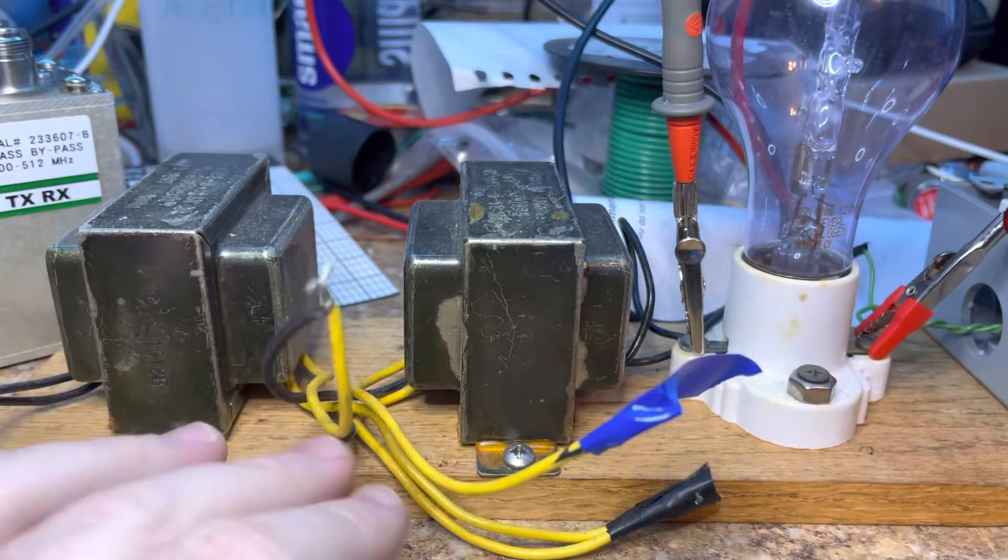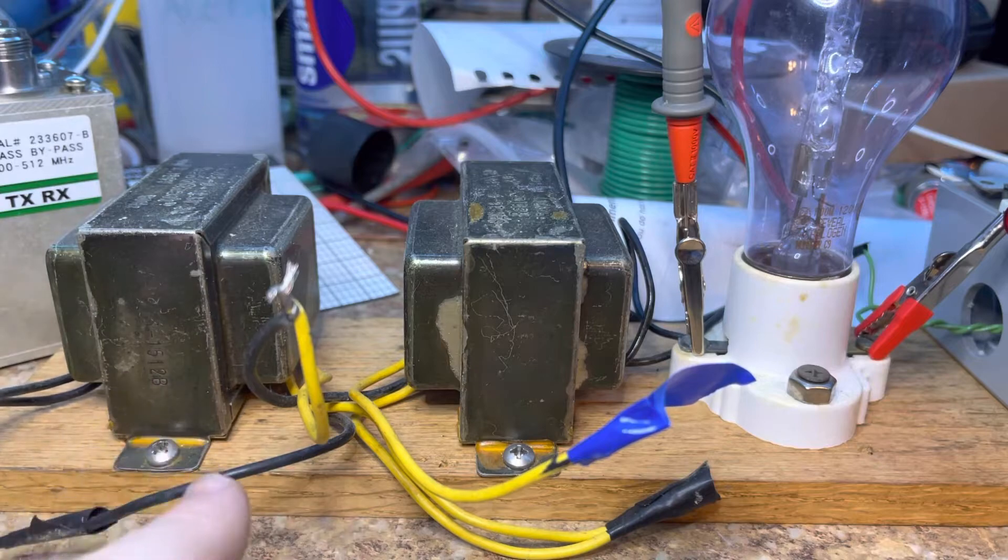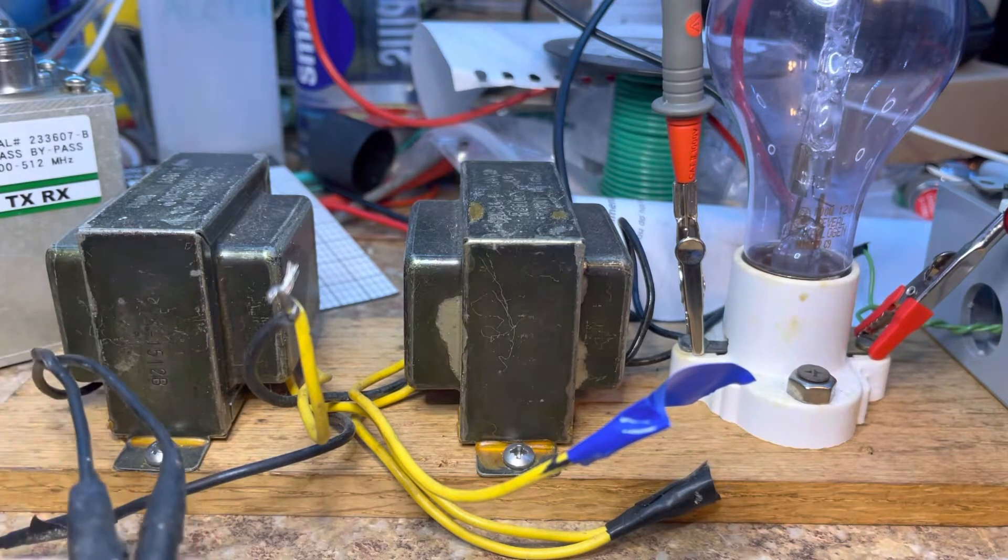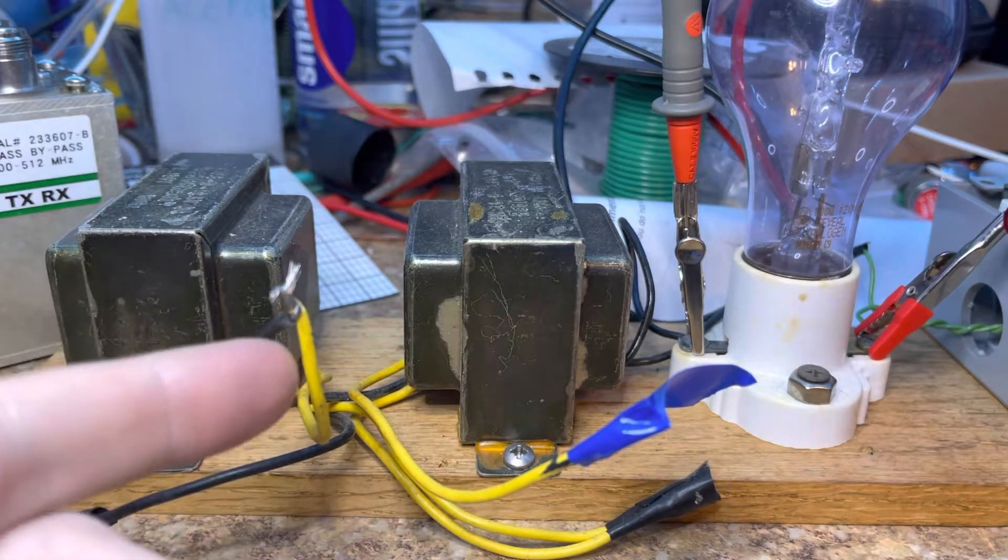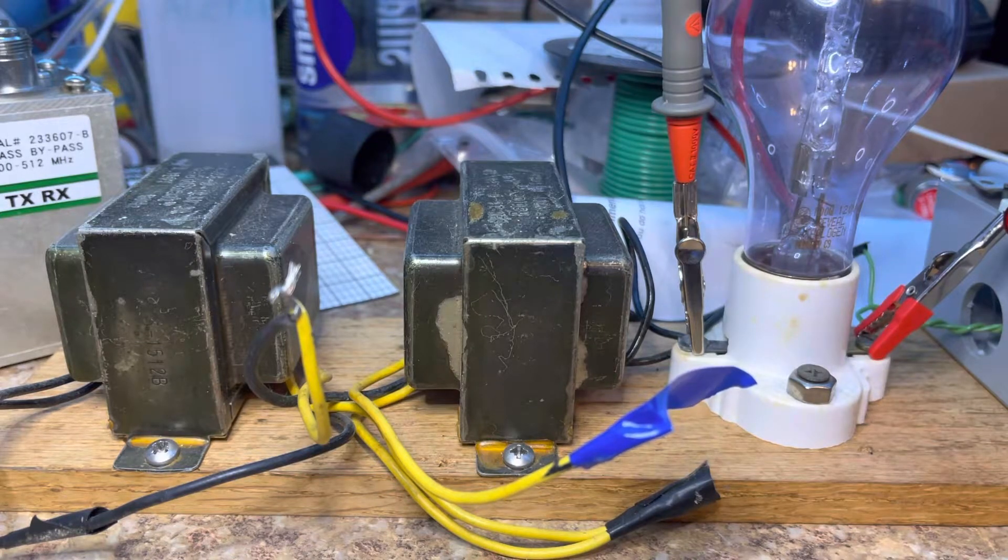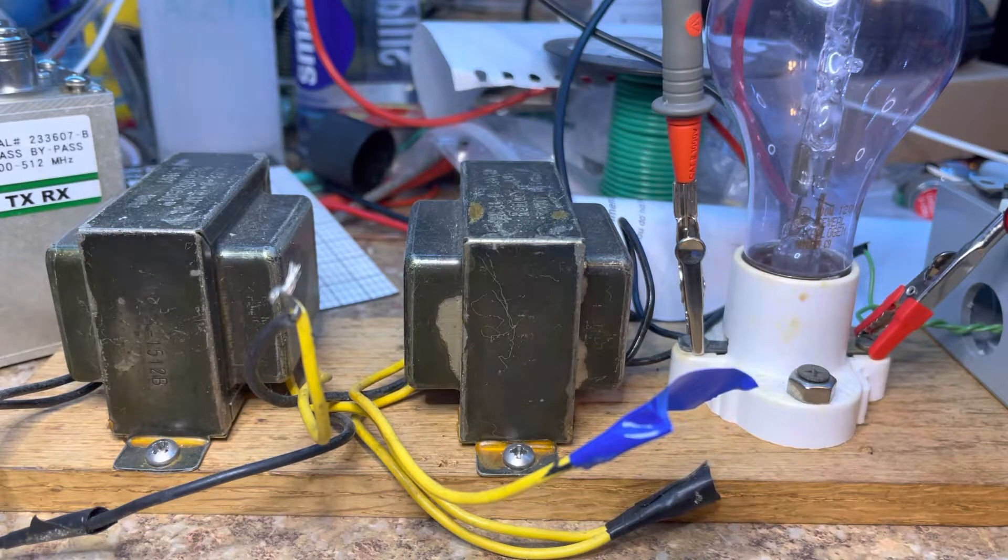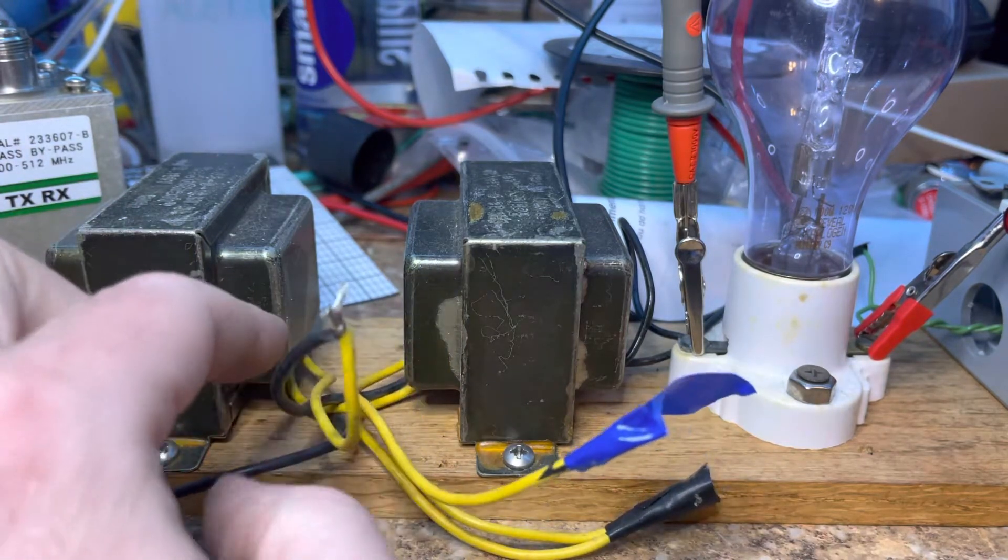And of course here's the two primaries back, or secondaries back to back, so this is fully isolated. So it should come in here, be transformed to 12 volts, get transformed back up or to 24 volts AC, get transformed from 24 back to 120.